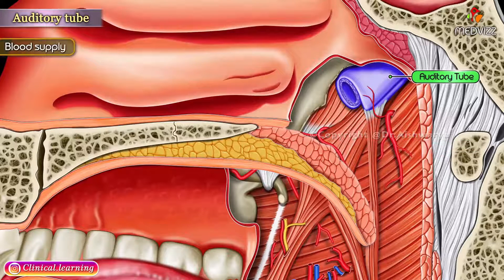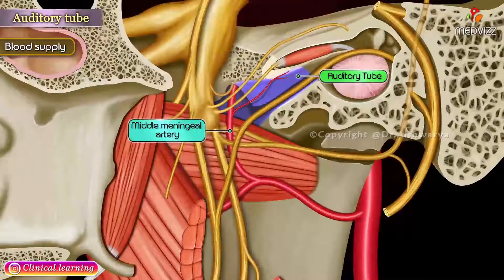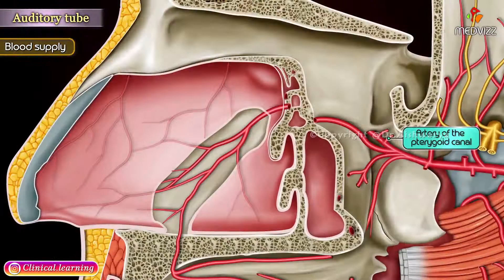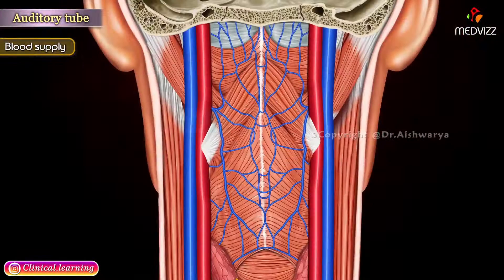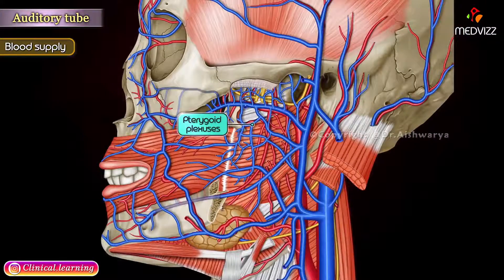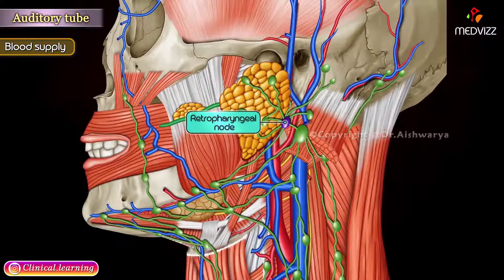Blood supply: The arterial supply of the tube is derived from the ascending pharyngeal artery, the middle meningeal artery, and the artery to the pterygoid canal. The veins drain into the pharyngeal and pterygoid plexuses of veins. Lymphatics drain into the retropharyngeal nodes.